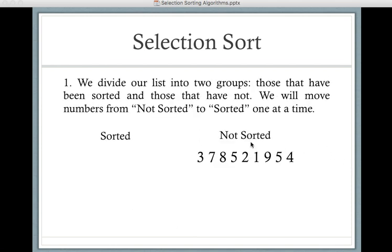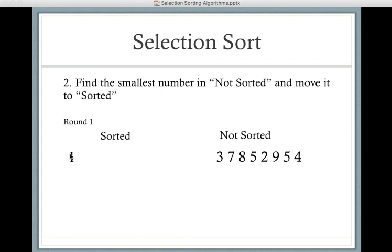All right, the way it works, we have a list of unsorted numbers here. We are just going to have a new category called sorted, and we're going to move numbers over from not sorted to sorted. So first, what's our smallest number? We look and number one is our smallest one. So it now belongs to the sorted pile, and it's gone from not sorted.